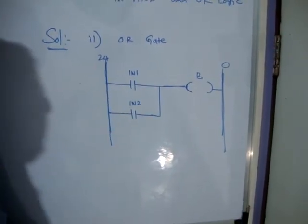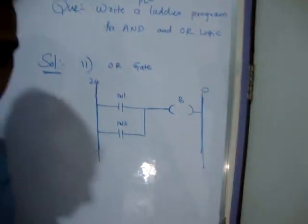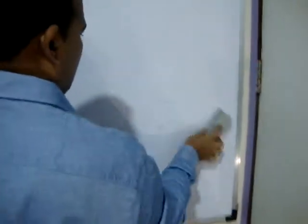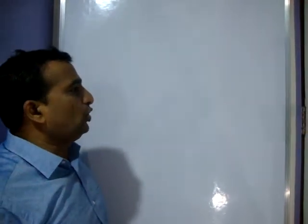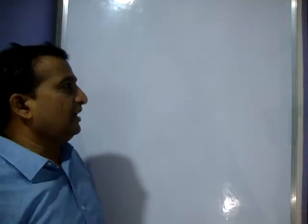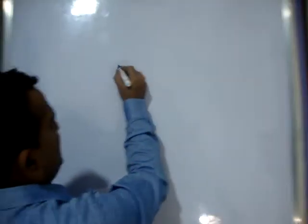In an OR gate, any one input being ON makes the output ON. This is the ladder programming for the OR gate. Next, I will apply this PLC diagram to our pneumatic system.